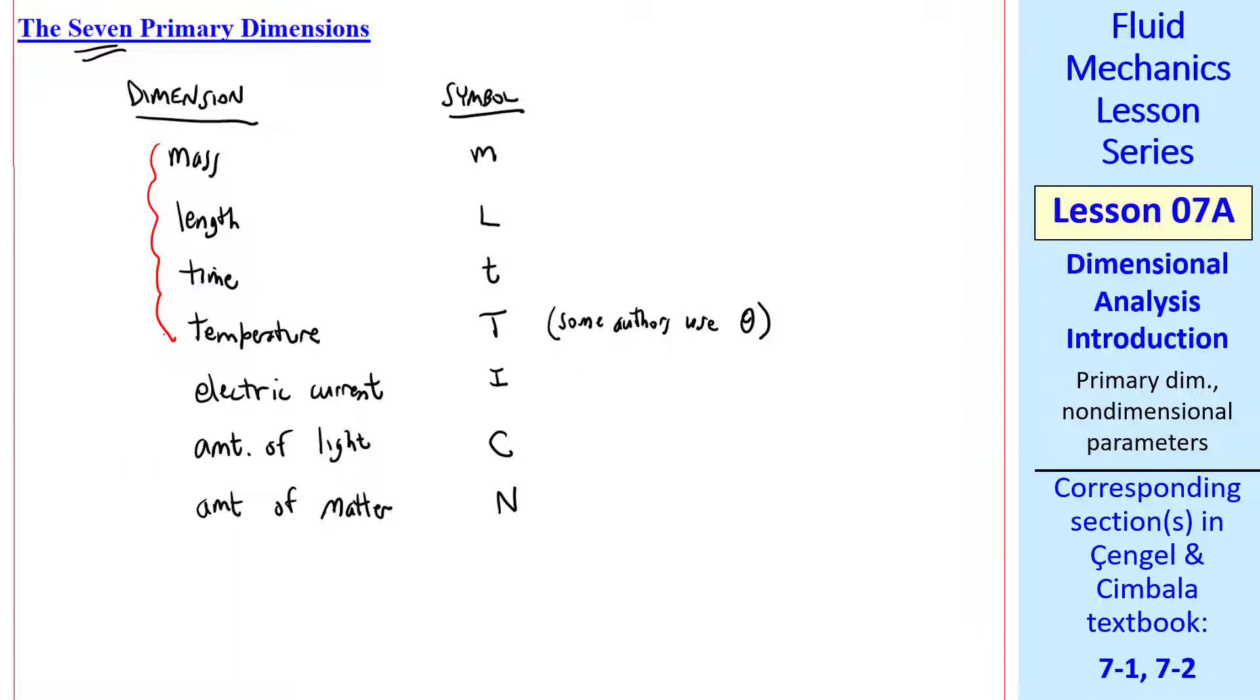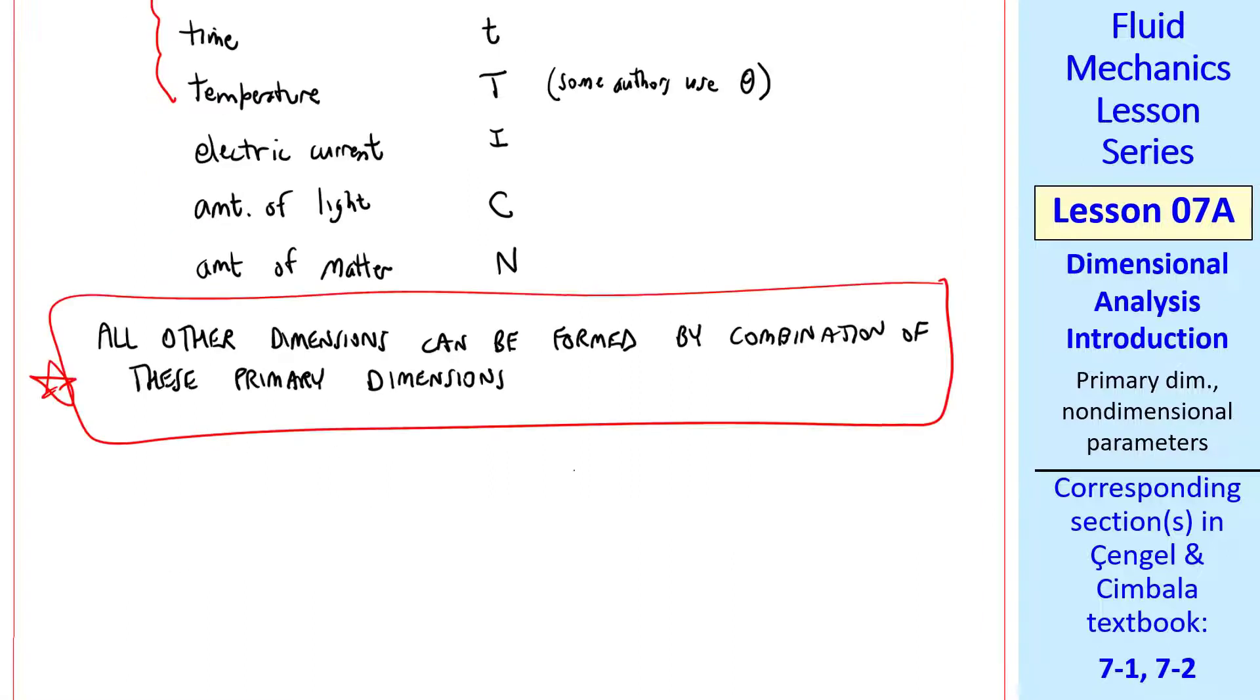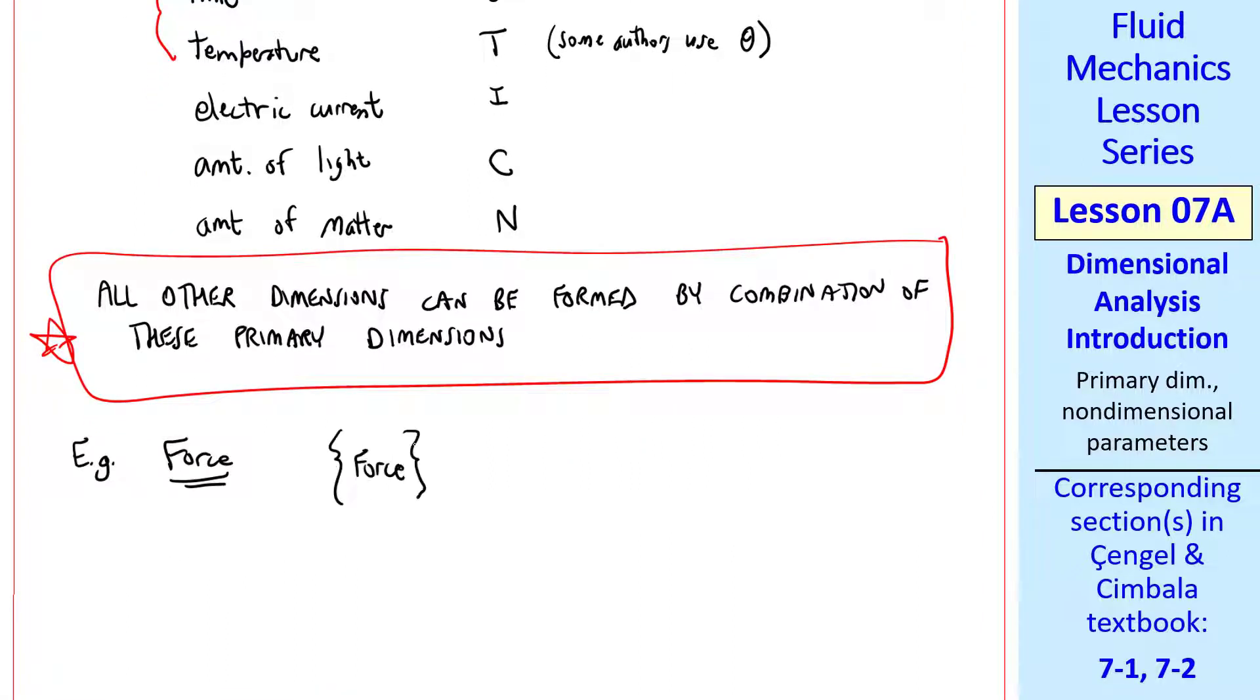In this course, we usually use only the first four, but these are called primary dimensions because all other dimensions can be formed by combination of these seven primary dimensions. For example, force. Recall my notation. The curly brackets mean the dimensions of.